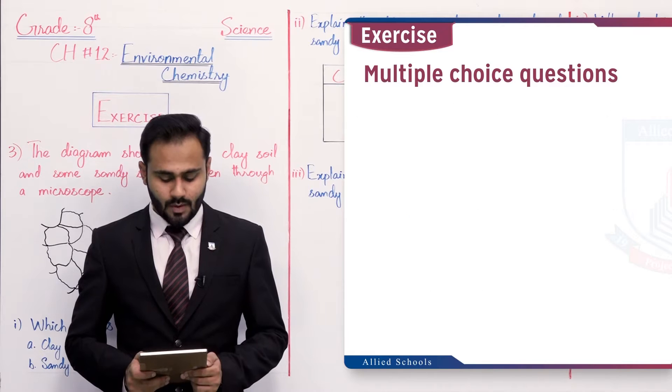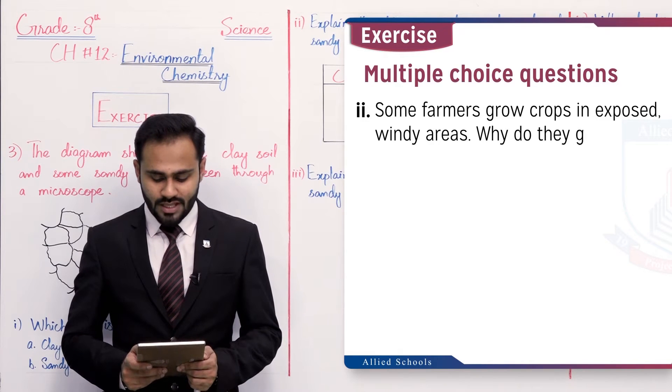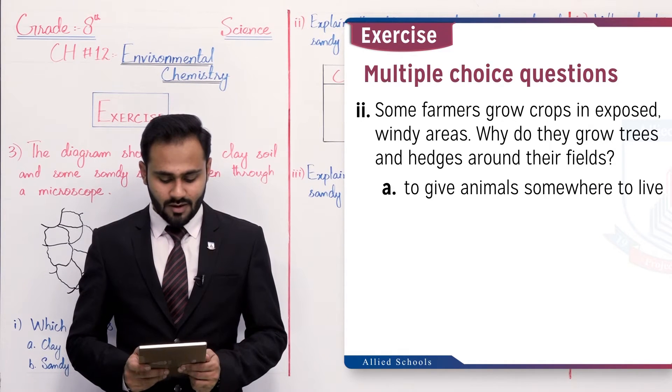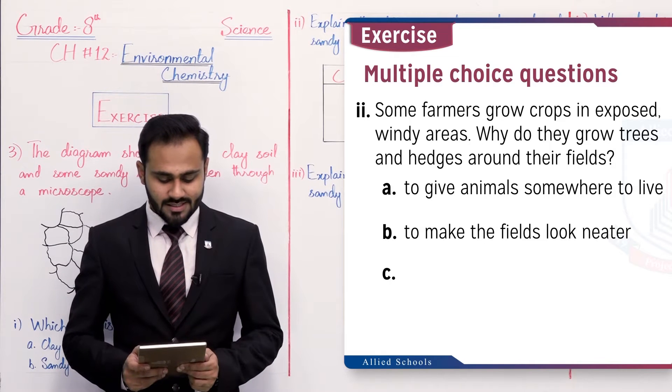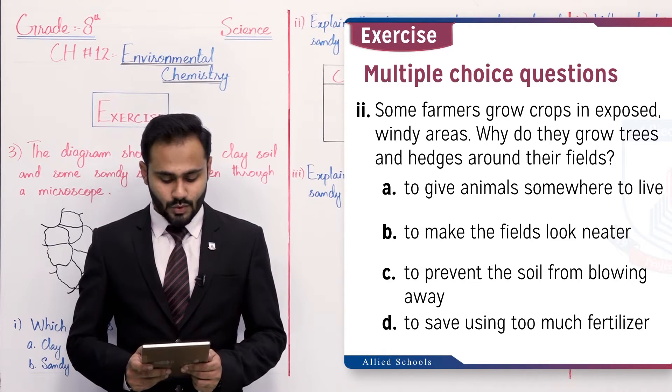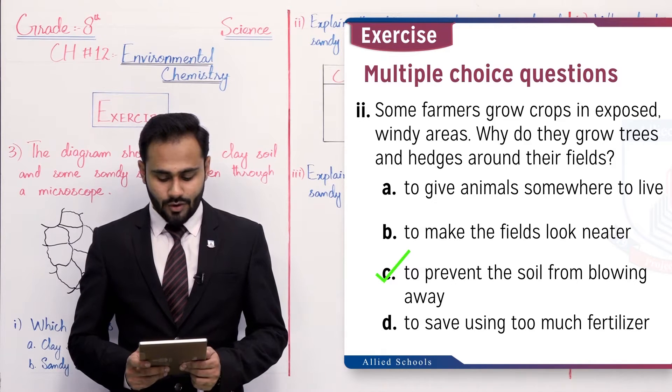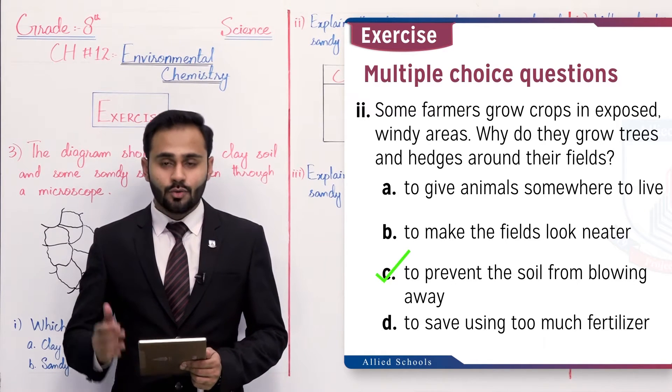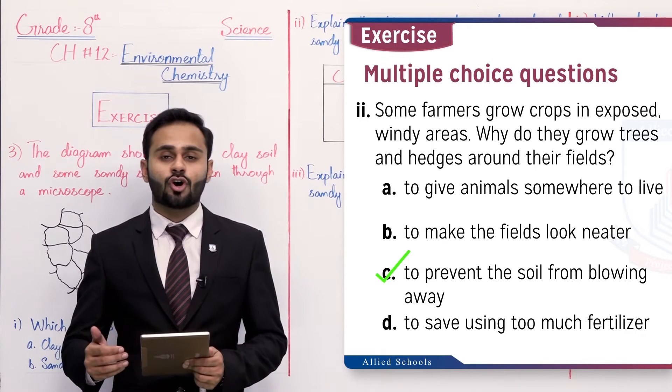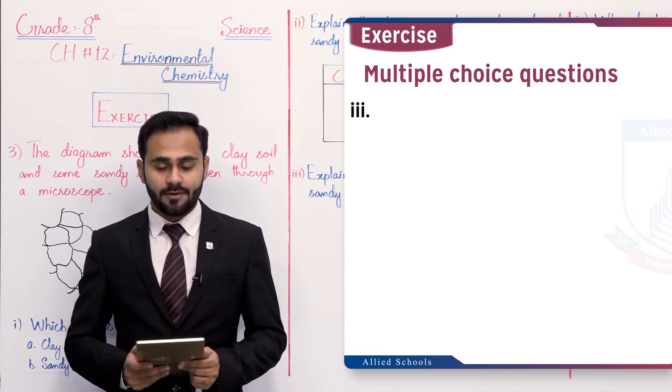MCQ number two: some farmers grow crops in exposed windy areas. Where do they grow trees and hedges around their fields? Option A: to give animals somewhere to live, B: to make the fields look neater, C: to prevent the soil from blowing away, and D: to save using too much fertilizer. Option C is correct, to prevent the soil from blowing away. Jahan par windy areas hota hai, wahan par trees kyun grow kiya jate hai just because ke us soil ko prevent karne ke liye taake woh hawa se soil ud na jaye.